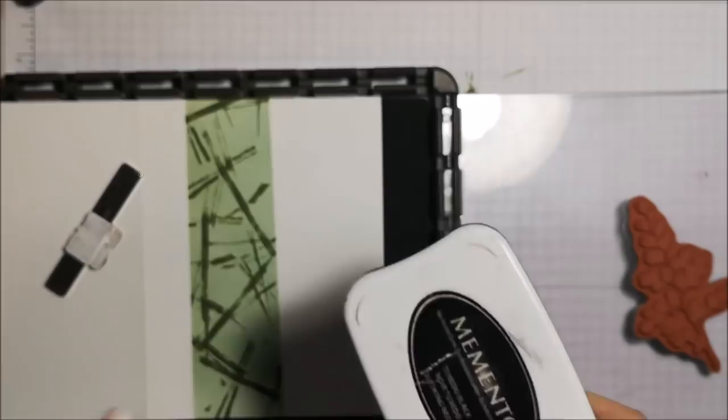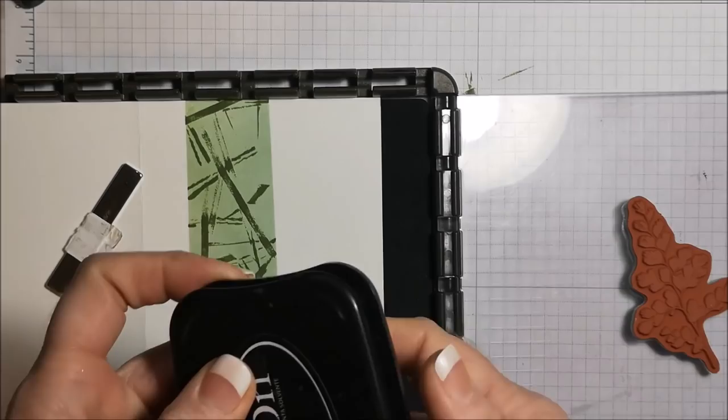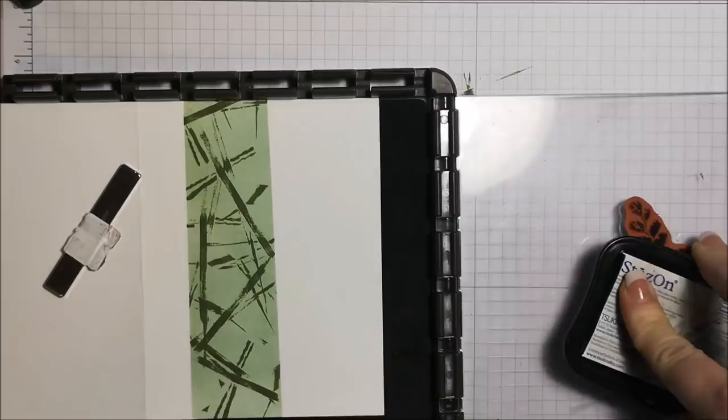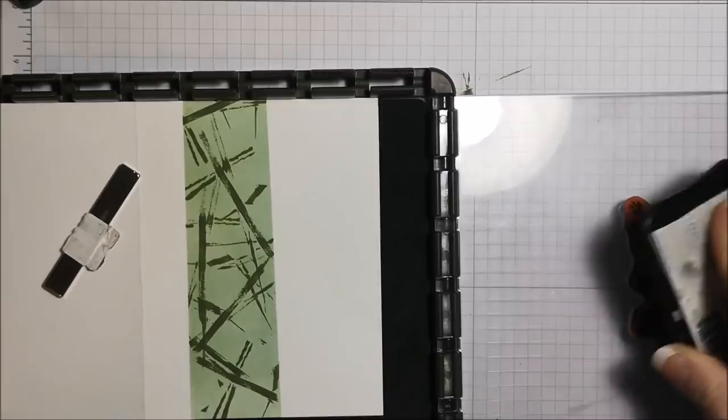I used my black memento in my original video because I was using a photopolymer stamp. But because this is red rubber I'm going to go ahead and use my StazOn. Now I could use either or. But when you're using photopolymer stamps you want to use your memento ink instead of StazOn. I really love my black StazOn. And have you ever smelled it? It smells like almond extract. Really, really delicious smelling. So it's a bonus of using the StazOn.